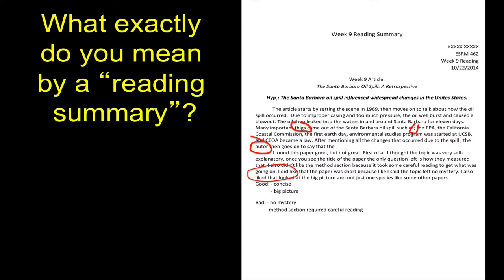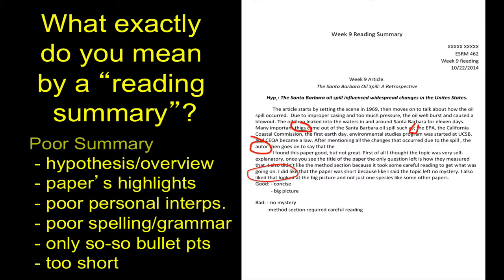Here's another example of another reading summary. This one is what we'd call a pretty poor summary. Yes, there is a hypothesis here. You can see that hypothesis right here. And we have the title, and we have the date, and this and that. But not particularly detailed. All kinds of spelling errors and grammatical errors. And it's very short, not very complete. So this would be characterized as a poor, not a very well done reading summary. Don't submit something like this.